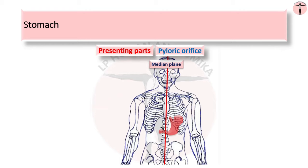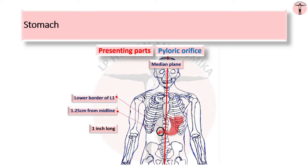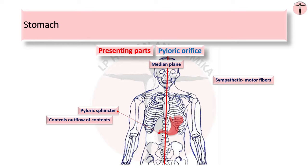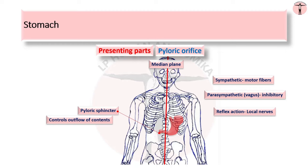The pyloric orifice is formed by the pyloric canal, about 2.5 cm long, situated about 1.25 cm to the right of the midline at the lower border of L1 vertebra when the stomach is empty and the person is supine. The circular muscle coat is much thicker here, forming the anatomic and physiologic pyloric sphincter, which controls outflow of gastric contents into the duodenum. The sphincter receives motor fibers from the sympathetic system and inhibitory fibers from the vagi, and is also controlled by local nervous and hormonal influences from the stomach and duodenal walls. For example, stretching of the stomach due to filling stimulates the myenteric nerve plexus and reflexly causes relaxation of the sphincter.